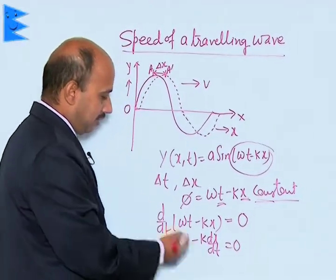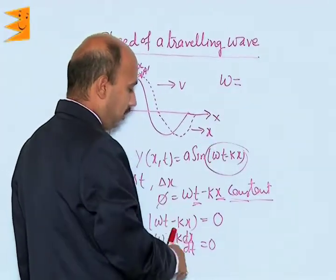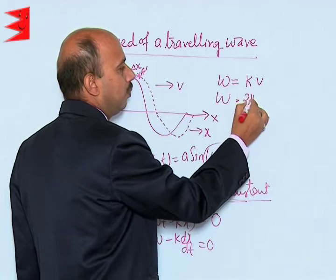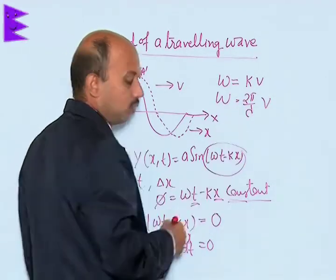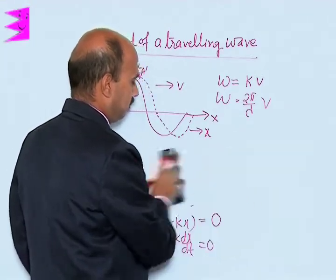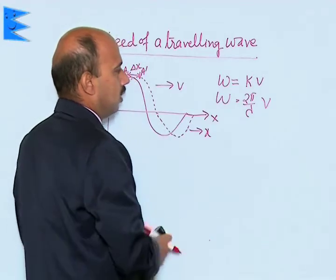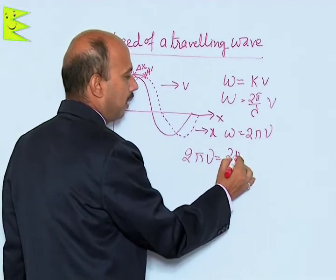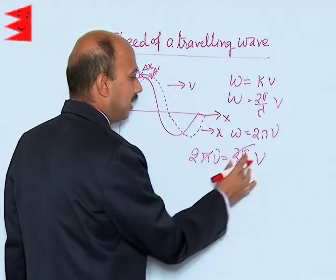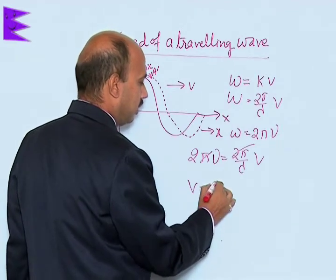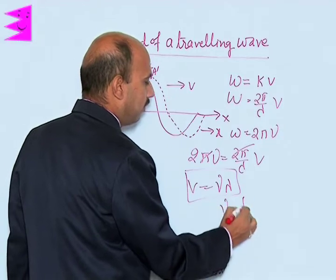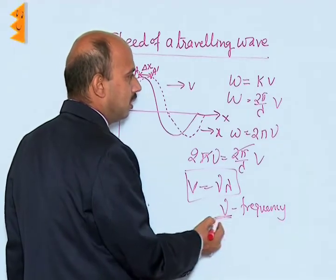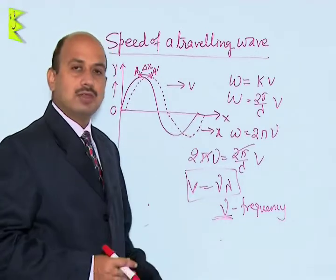So we can write ω = k(dx/dt), which means ω = k·v. Since k is the angular wave number, k = 2π/λ, and ω = 2πν, we get 2πν = (2π/λ)·v. Cancelling 2π, we obtain v = λν, where ν is the frequency. So v is the velocity of the wave and ν is the frequency — this is the relation between velocity, frequency, and wavelength.